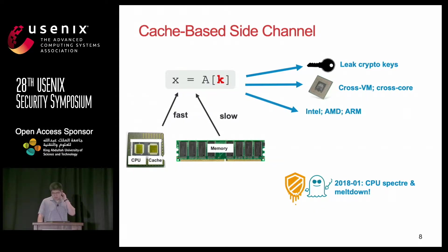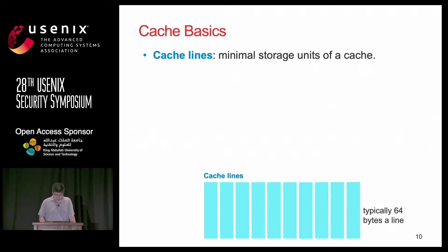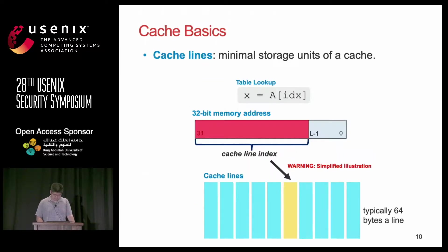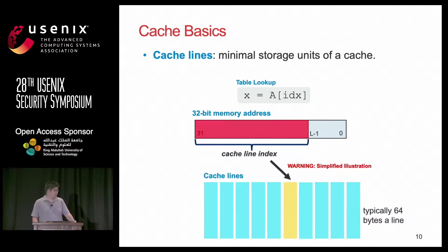The infamous CPU vulnerabilities called Spectre and Meltdown are somehow related to cache-based side channels. Regarding the basics of the cache: the minimum storage unit is a cache line, typically a 64-byte storage unit in hardware. When you have a memory lookup operation in your code, you get an address, and the higher bits of this address determine which cache line you're going to access.